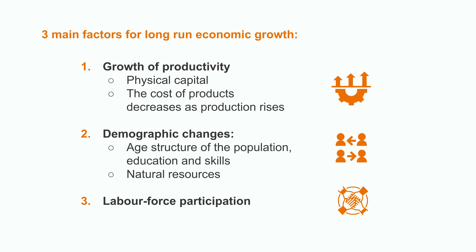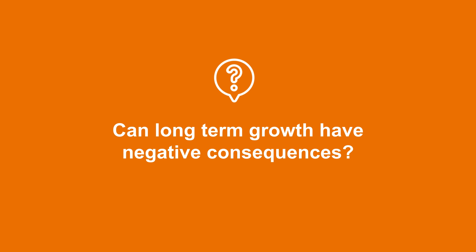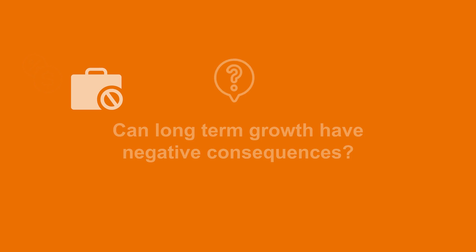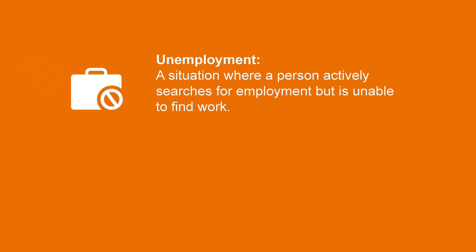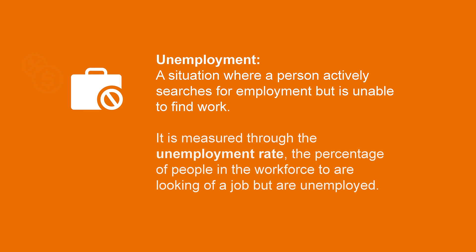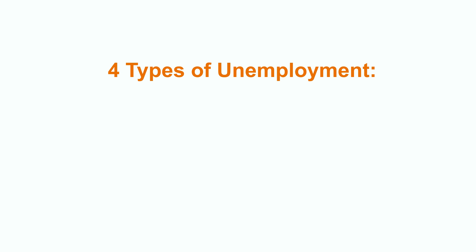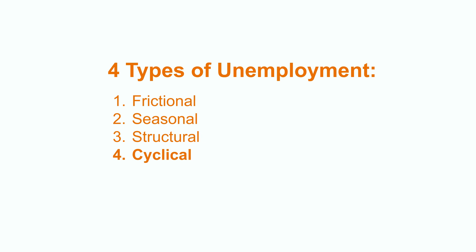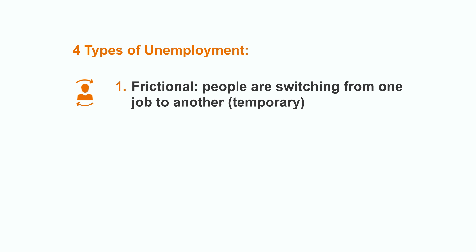Each factor is not always enough. Assuming that a country achieves economic growth in the long run, can that have negative consequences? Yes, it can. Unemployment can be a serious consequence of long run economic growth. Unemployment refers to a situation where a person actively searches for employment but is unable to find work. It is measured with the unemployment rate — the percentage of people in the workforce who are looking for a job but are unemployed. There are different types of unemployment: frictional, seasonal, structural, and cyclical. Frictional unemployment occurs when people are switching from one job to another and is supposed to be only temporary.